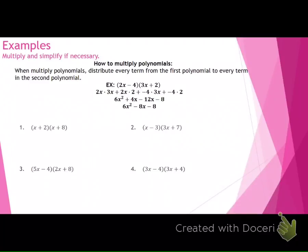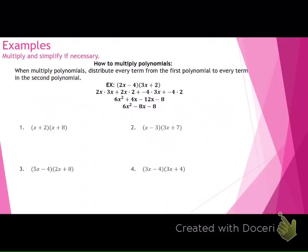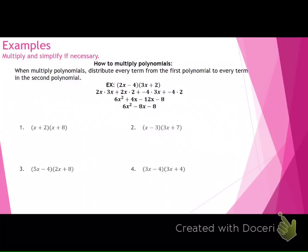Let's get started. If we are multiplying polynomials by polynomials, you need to remember a few things. When you multiply a polynomial by a polynomial, you distribute each term from the first polynomial to every term in the second. This is called the extended distributive property.